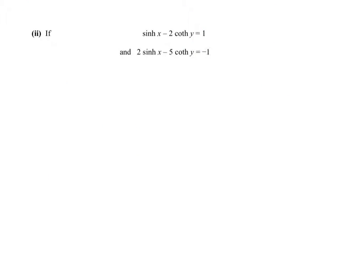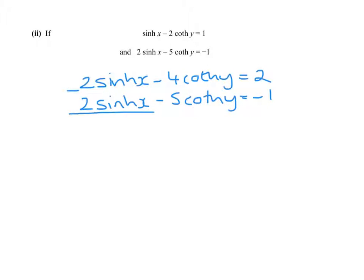We're going to start by trying to solve them as simultaneous equations. We're going to multiply the first one by 2, write the second underneath, and we're going to subtract. We've got to be careful of our signs here. Minus 4 minus 5, minus minus 5 is minus 4 plus 5, so that is 1. And 2 minus minus 1 is 3.